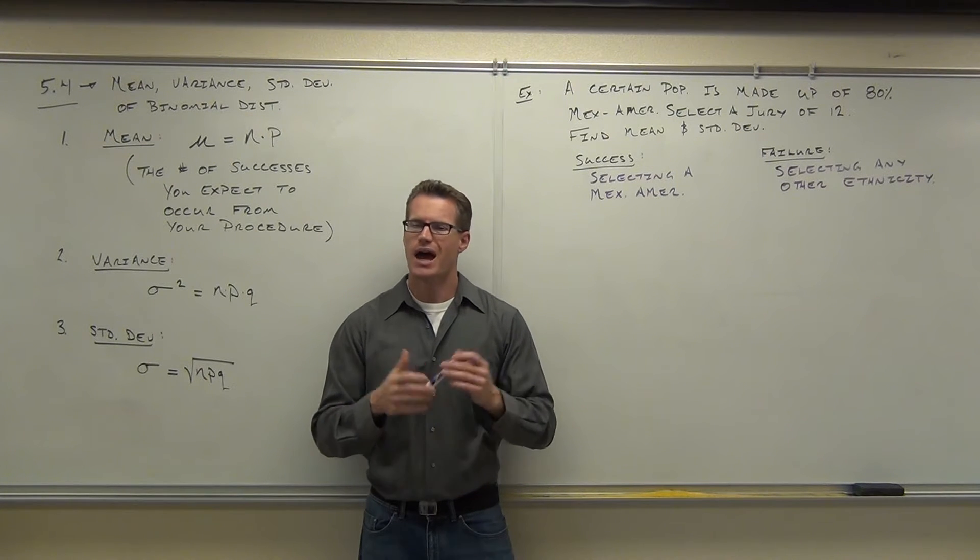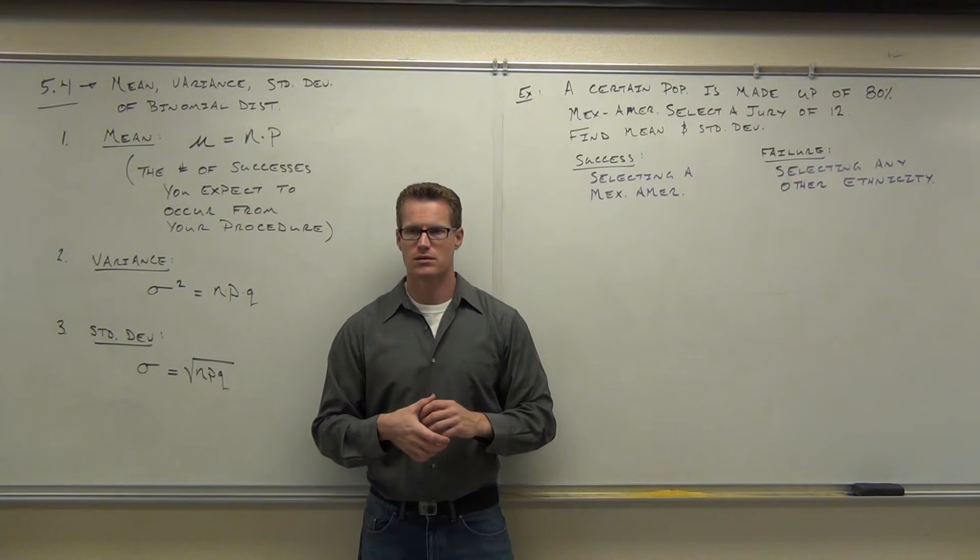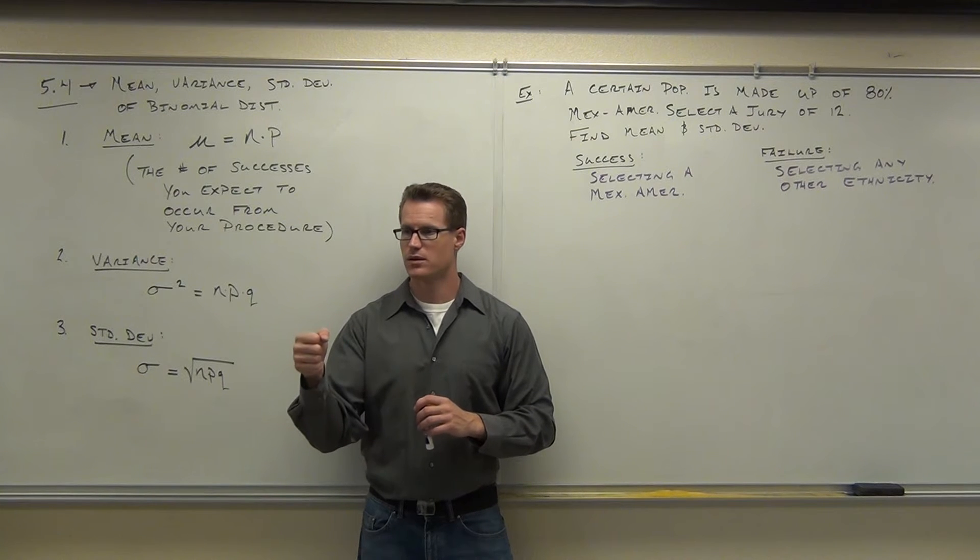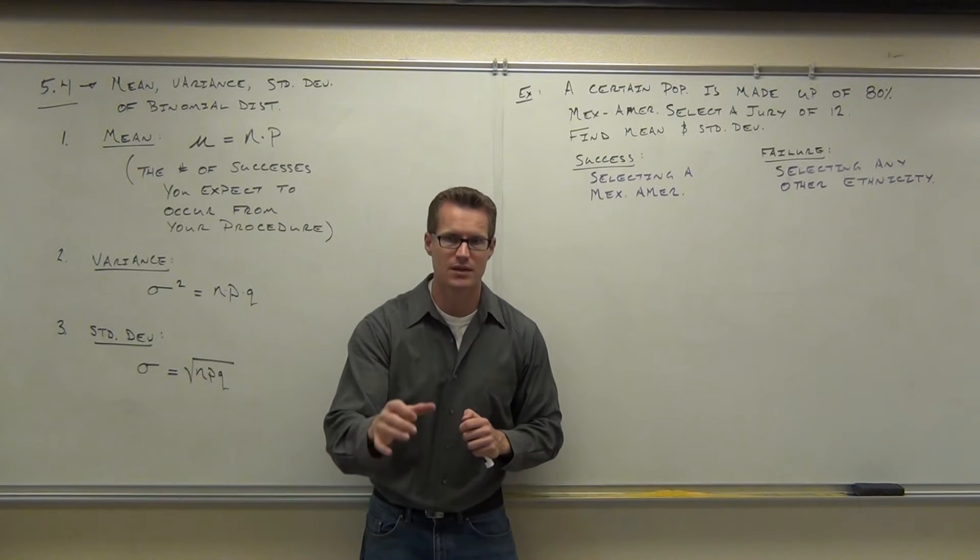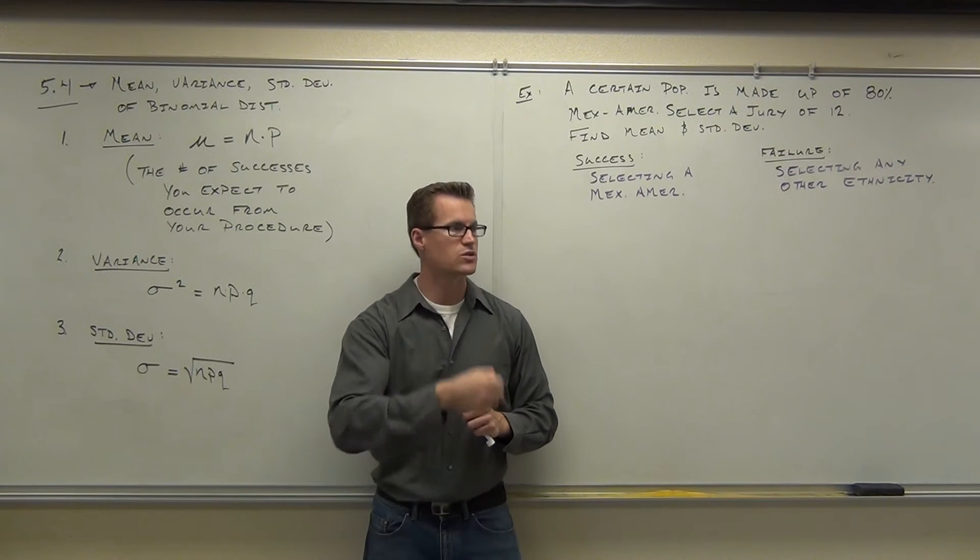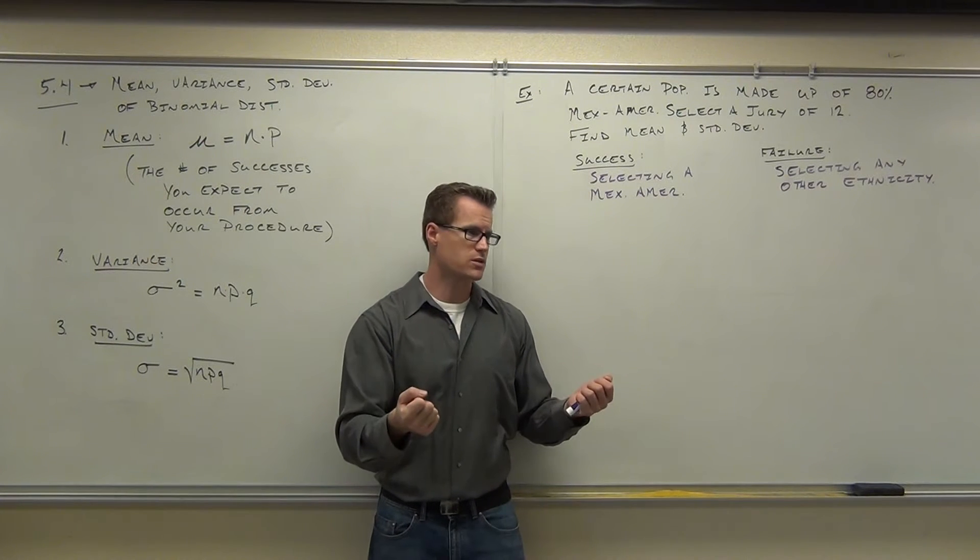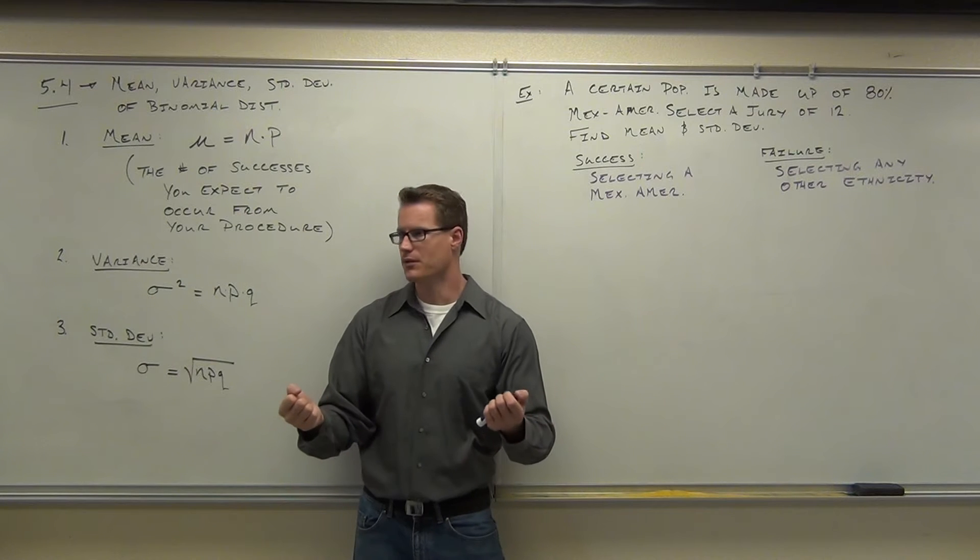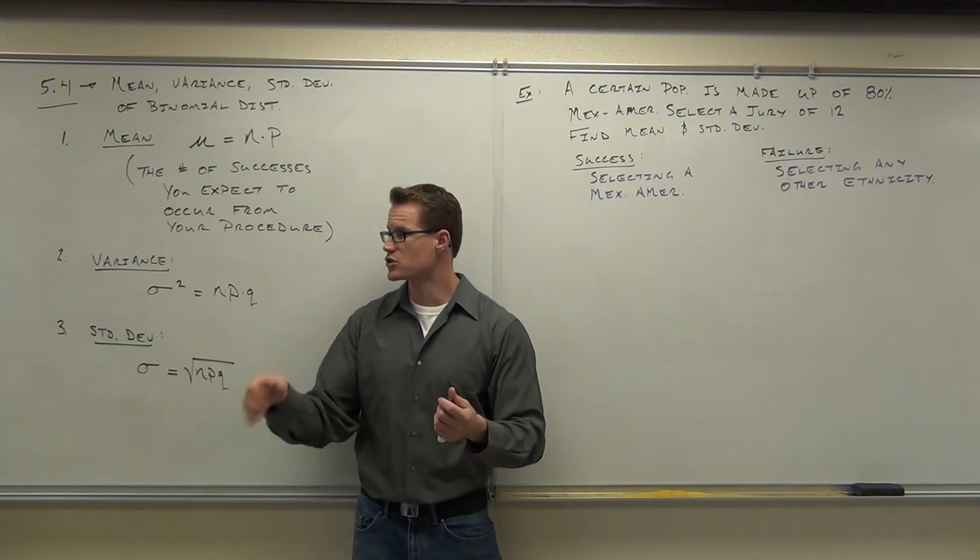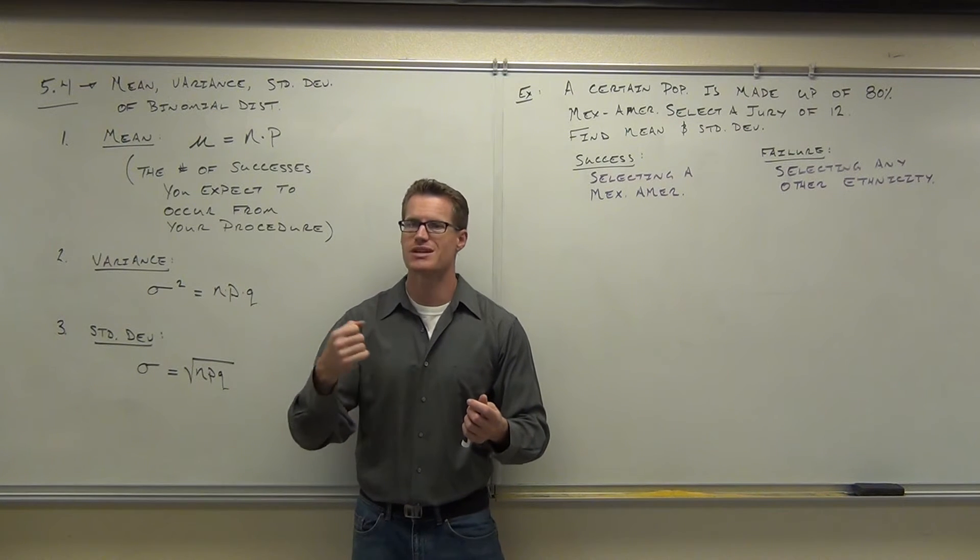So, the trial here is, how many people are we selecting? Each one of those is a trial. So, how many times are we repeating this trial? Twelve trials. So, tell me, what is our N then? Twelve. We're selecting twelve individuals. Each one of those is a trial.